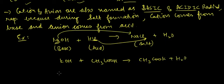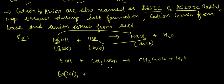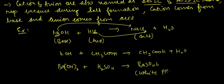Next example we have Ba(OH)2 and H2SO4 forming BaSO4 which is white precipitate, plus 2H2O.